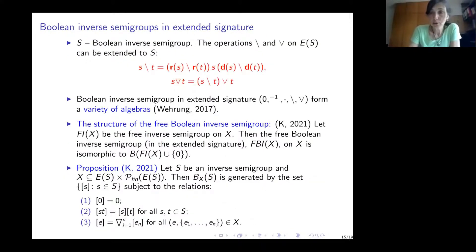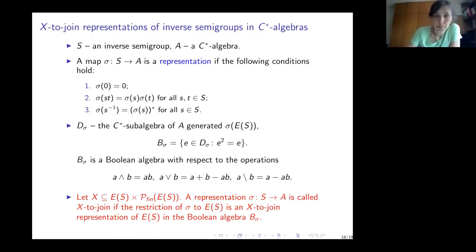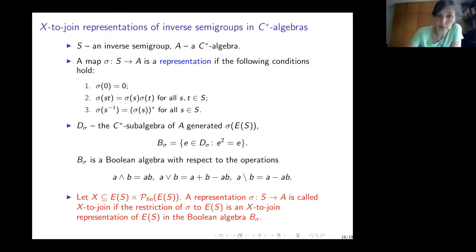Boolean inverse semigroups can be presented as algebras using a difference operation and a skew join operation, and they form a variety of algebras — proved by Wehrung in 2017. I have found a presentation of B(X,S) in terms of generators and relations in a recent paper. The definition of X-to-join representation of inverse semigroups in C*-algebras goes similarly to X-to-join representation in Boolean inverse semigroups, using the correspondence between projections in C*-algebras and Boolean algebras.